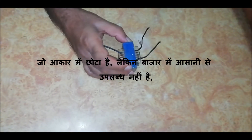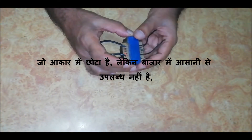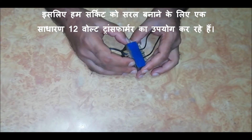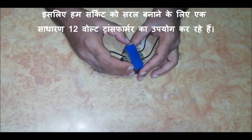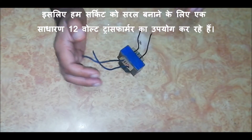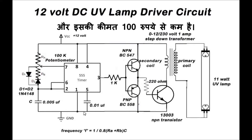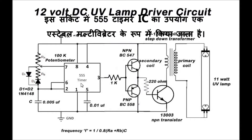So we are using a simple 12V transformer to simplify the circuit. Let's look at the circuit diagram. It is a very simple circuit and costs less than Rs 100. In this circuit, a 555 timer IC is used as an astable multivibrator.